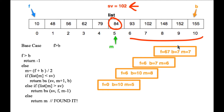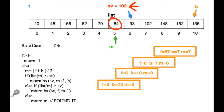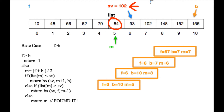Because the list is sorted, we know that if our search value is in the list, it has to be in the upper part of the array. So we adjust front to be 6. We do that in a recursive call: since list[m] is less than our search value — 84 was less than 102 — we call BS passing in search value, m+1 as the new front (so 6), and back stays the same at 10. That defines the new subarray we need to search.